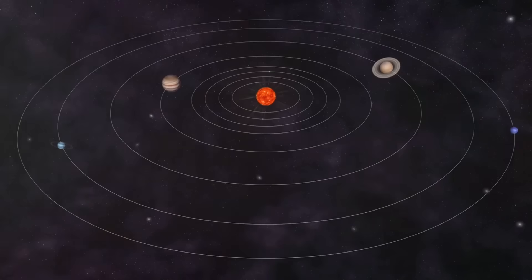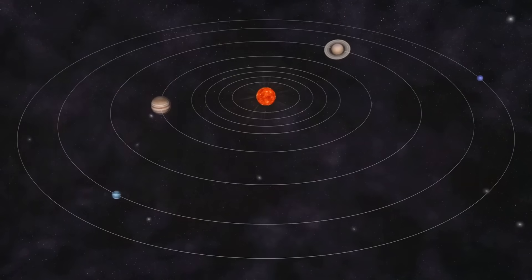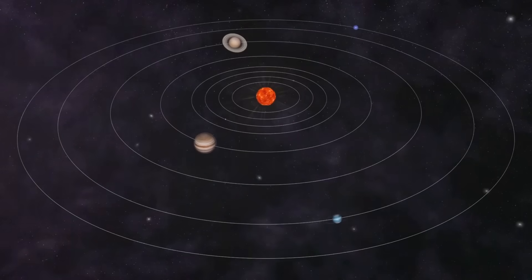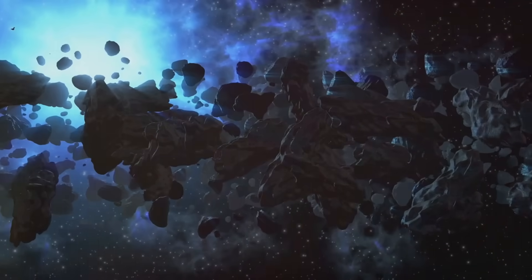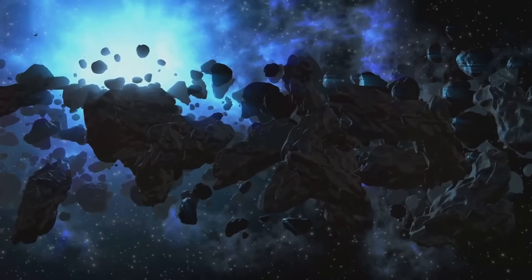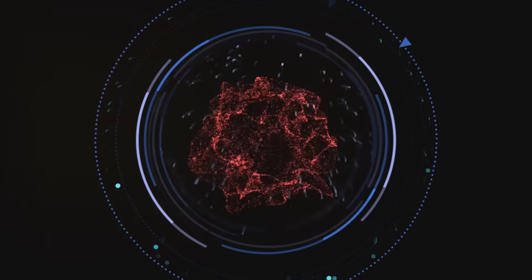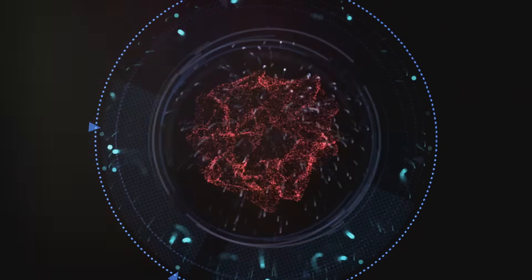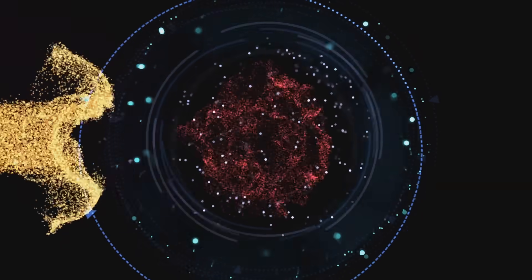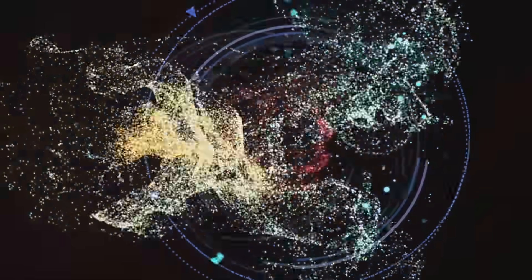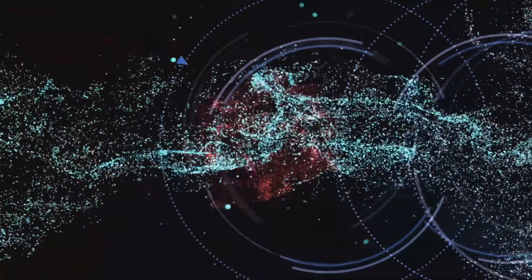But here's the interesting part. The helio tail isn't just a single unified structure, it's divided into two distinct regions. One region is filled with particles that have a particular magnetic orientation, while the other region is filled with particles that have the opposite orientation. And these two regions don't just sit side by side peacefully, they're constantly interacting with each other, leading to a dynamic and ever-changing helio tail.